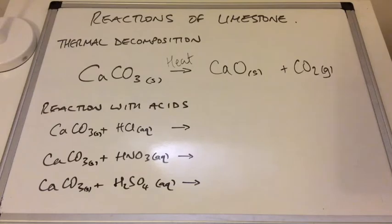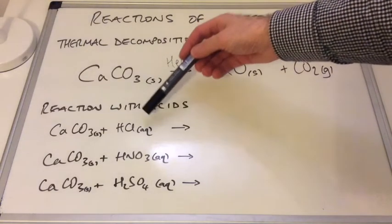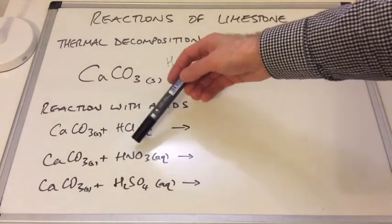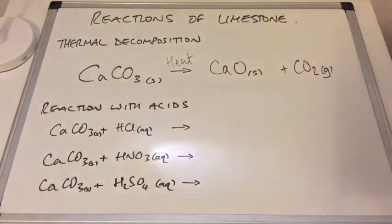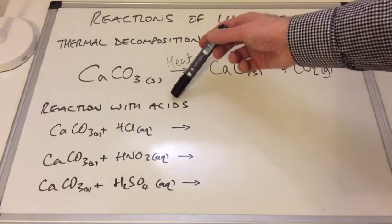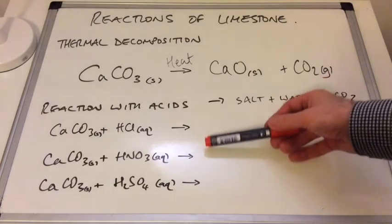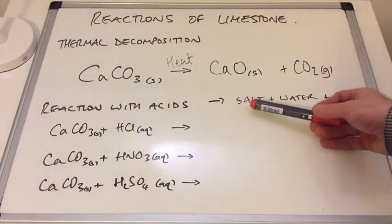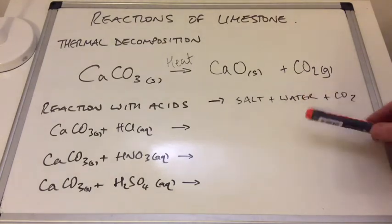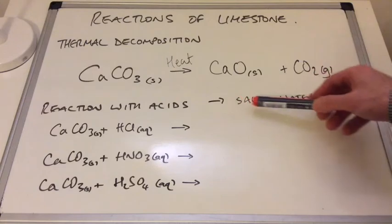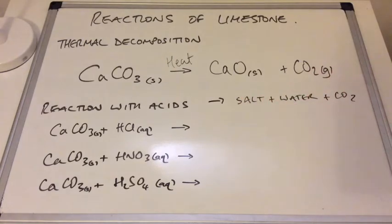The second reaction is calcium carbonate reacting with acids. Calcium carbonate solid is common to all three equations, but we vary the acids: hydrochloric acid, nitric acid, and sulfuric acid. In general terms, when you react an acid with a carbonate, you get a salt plus water plus carbon dioxide. So each equation needs three products: salt, water, and CO₂. The water and CO₂ are common to all three — the only difference is working out what salt is formed.